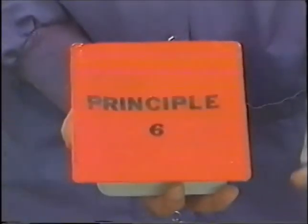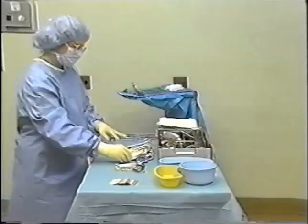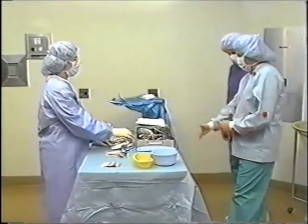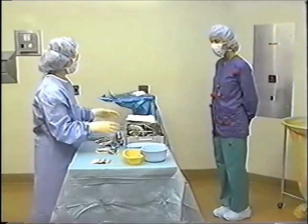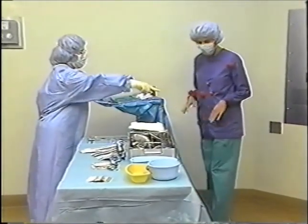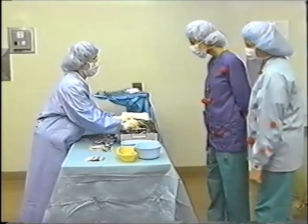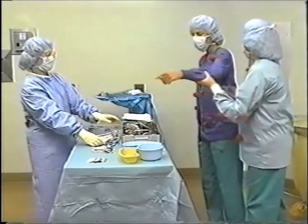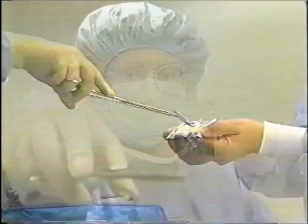Principle number six: sterile persons and items touch only sterile areas; unsterile persons or items touch only unsterile areas. Unscrubbed persons must maintain enough distance from a sterile field to prevent contamination. Unsterile people should always face the sterile field and should not walk between two sterile fields. Unsterile persons should not lean or reach over sterile areas and should always maintain a distance of safety to prevent accidental contamination. A safety margin must be maintained either by space or by using an instrument for extension.